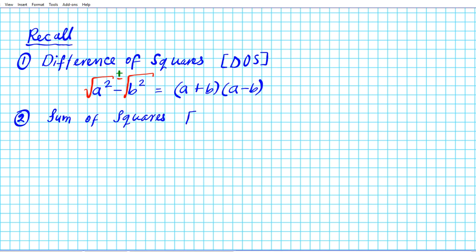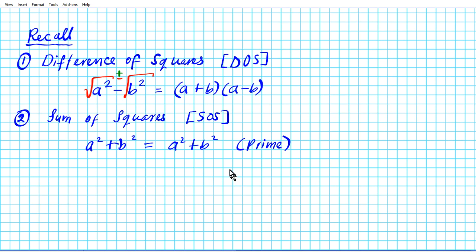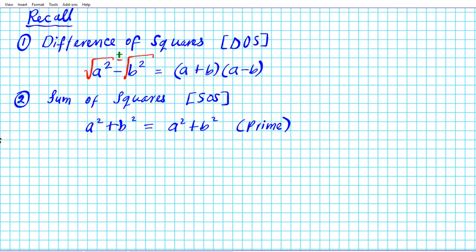If you have a² plus b² and you want the factored form to have integer coefficients, this remains the same — it is prime. If you want to factor it further you'd have to use imaginary terms, which is not applicable to the problems we are working on in this presentation. Now let's take a look at some problems.